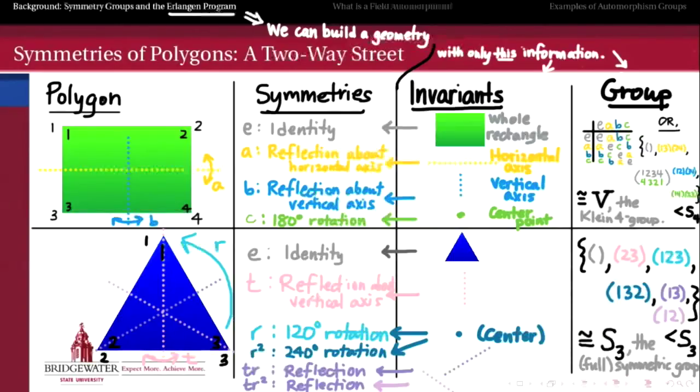In other words, if I know all the information on the right side of this page, then the Erlangen Program says I should be able to reconstruct the information on the left side of the page. Now there are a lot of different polygons that might have Klein four symmetry, for example, an ellipse or maybe some non-convex polygons. But the idea is that all of the geometries of those polygons would be equivalent in some way. So understanding the symmetries of an object should help us to understand and then possibly to recreate that object, if we also know what the invariance of those symmetry operations are.